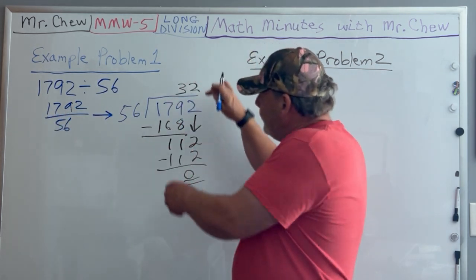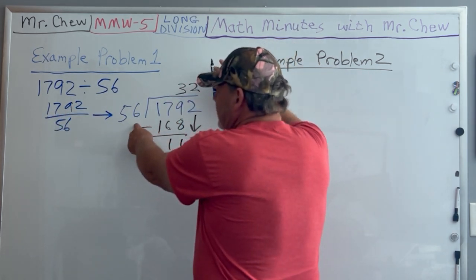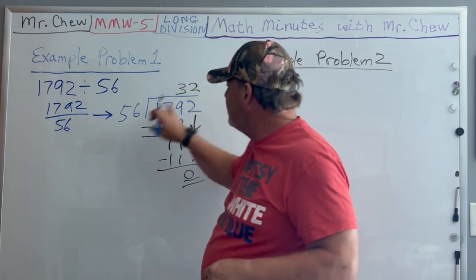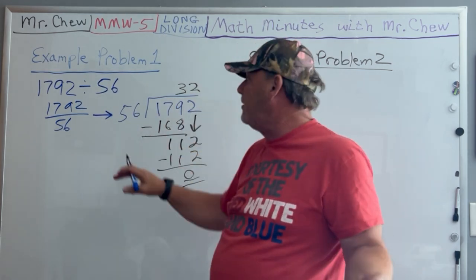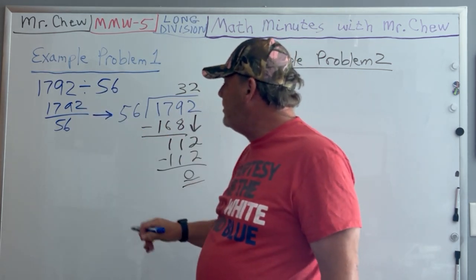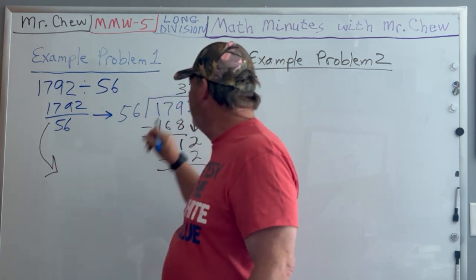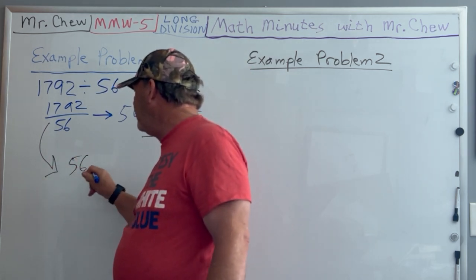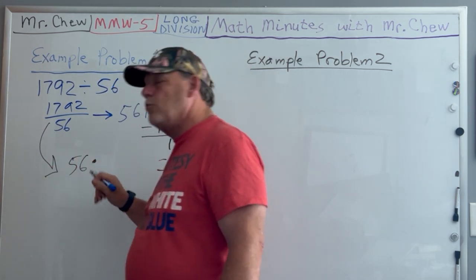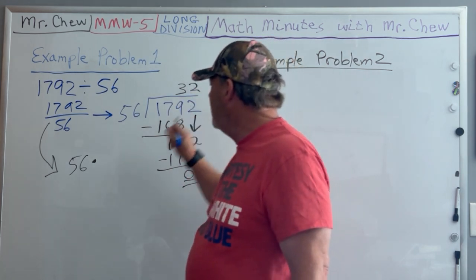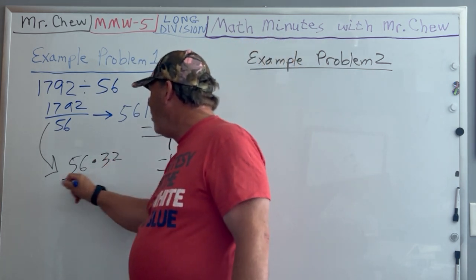Which means I could have taken this 1792 and written it as these two factors. If you multiply these two numbers together, try it on a calculator, you're gonna get 1792.